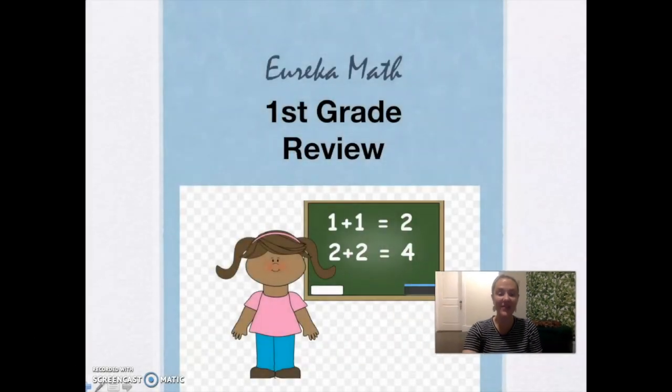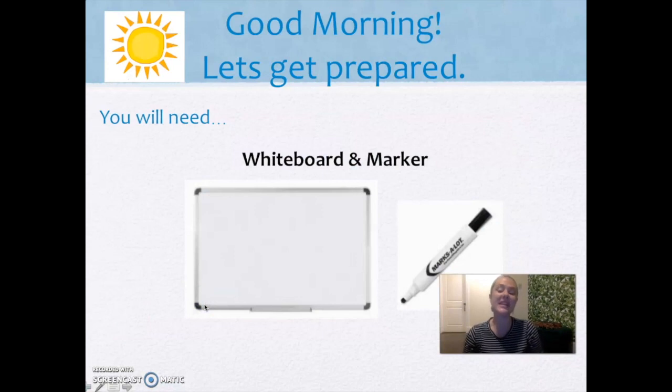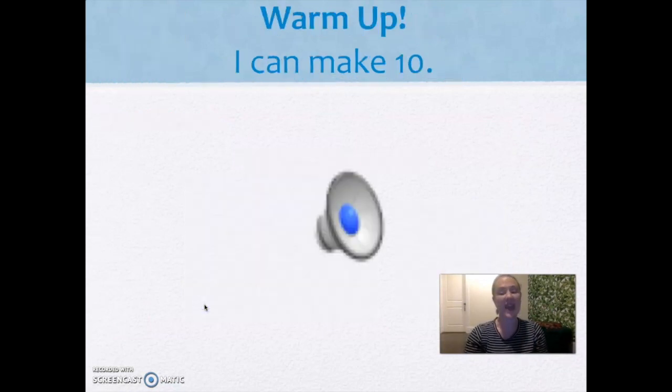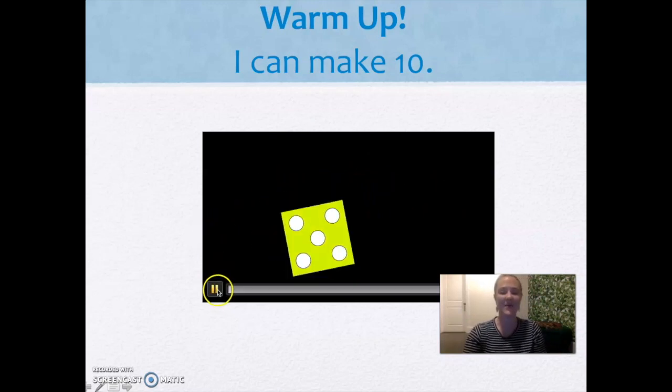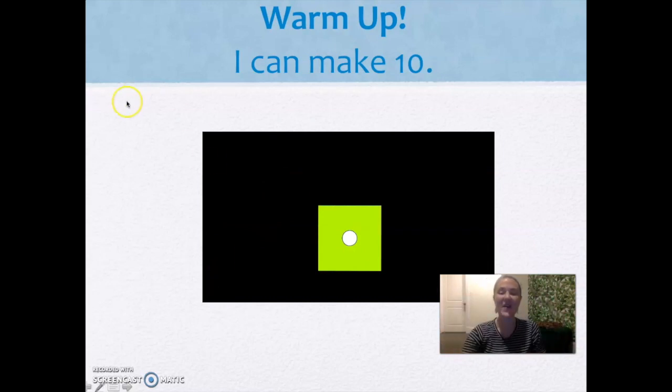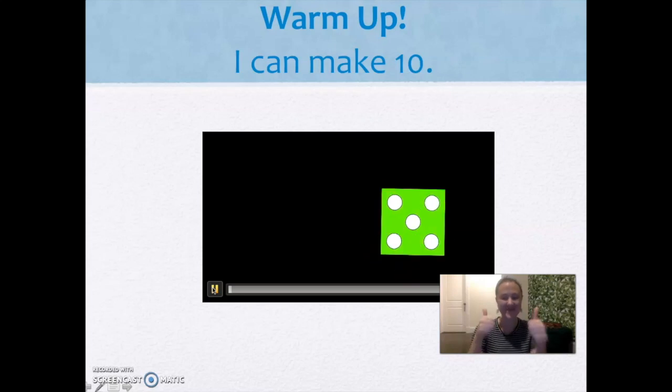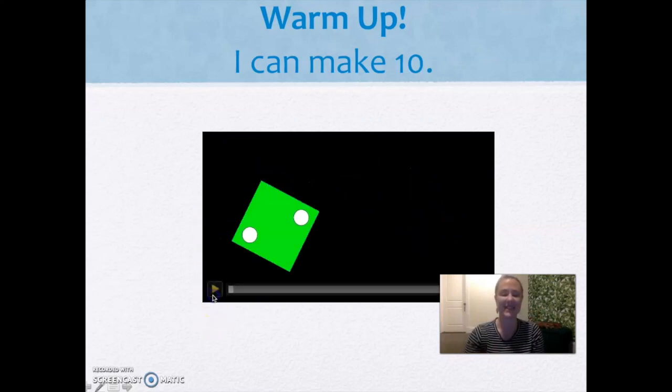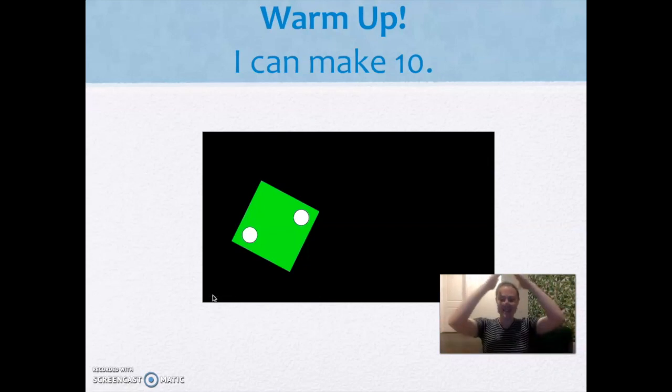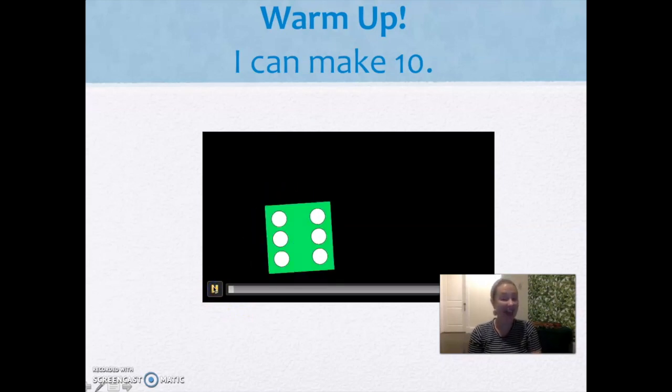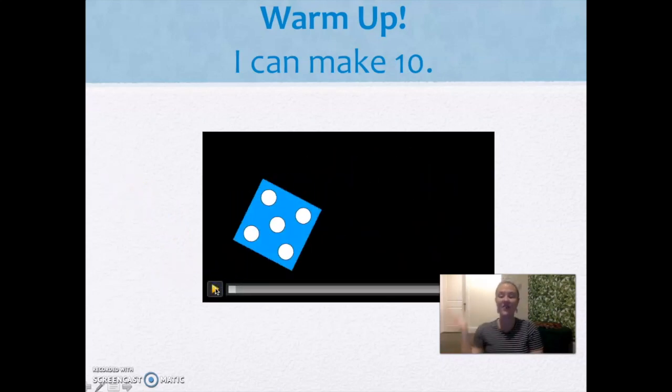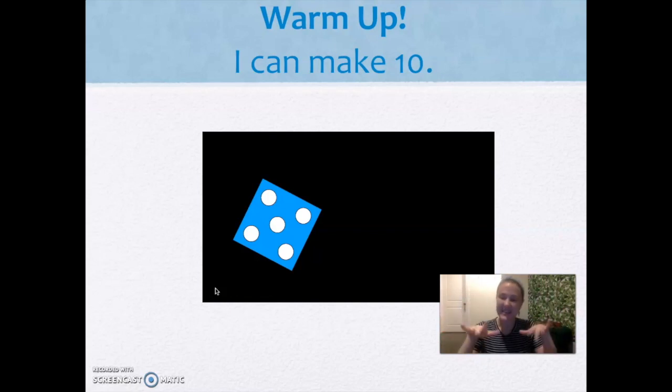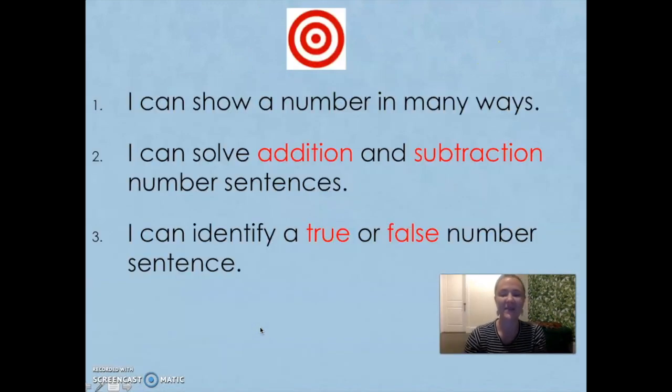Good morning, first graders. It's time for math review. Let's go ahead and get started. You will need your whiteboard and marker. Let's warm up playing our let's make a ten. When I roll the dice, you're going to tell me the other partner to ten. Here we go. One. One and what make ten? Well done, friend. Did you say nine? One and nine make ten. Two. Two and what make ten? Did you say eight? It was eight. Here we go, last one. Five. Five and what make ten? Nice work. Five and five make ten.